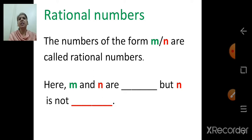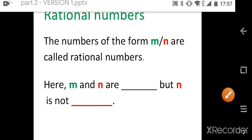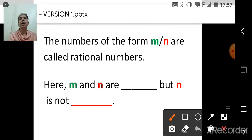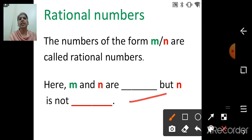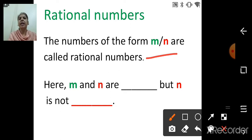So what are rational numbers? The numbers of the form m upon n are called rational numbers, where m and n are integers and n is not equal to 0. Keep in mind: m and n are integers and n, that is the denominator, is not equal to 0.